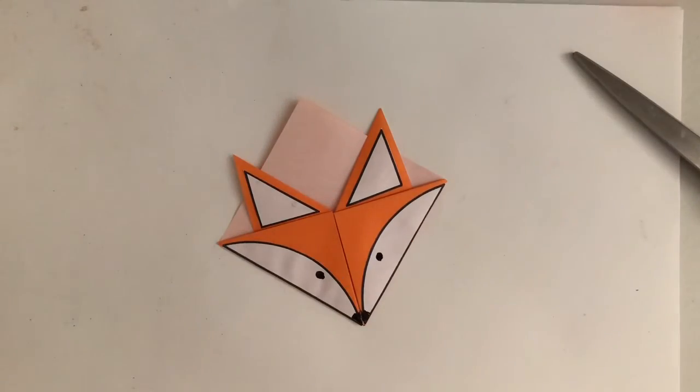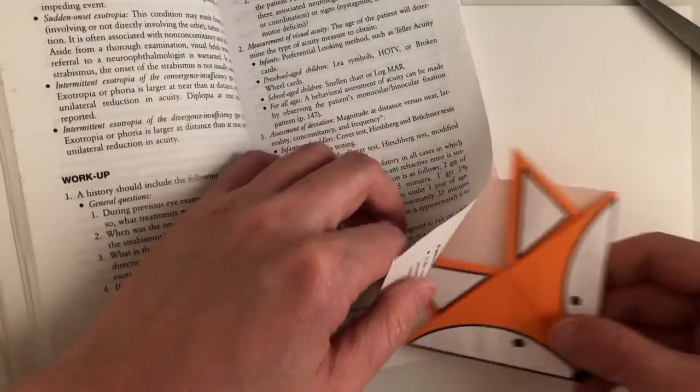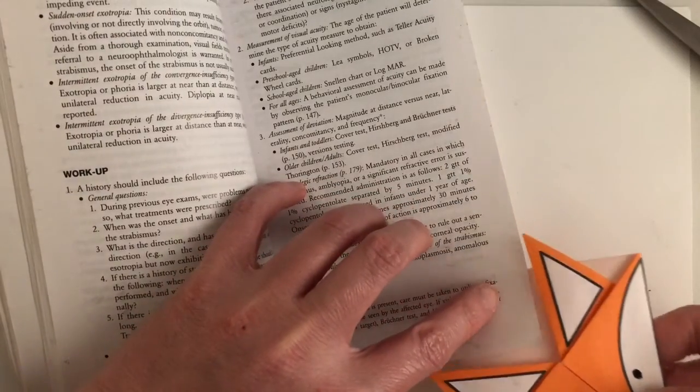Once that's done, then our fox bookmark is ready to go. You can use it to mark the place where we stop reading in a book, just like this.